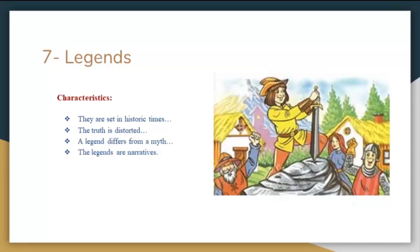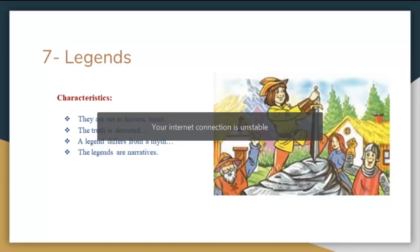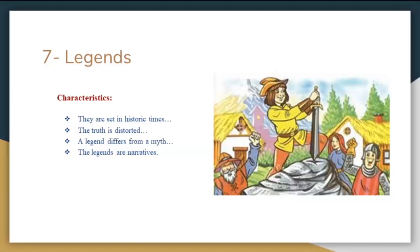The next category is legends. Legends are unverifiable historical or biographical accounts that were told by professional poets whose function was to recite the great deeds of their cultural heroes. One of the most popular legends in the English language is King Arthur. Some characteristics: they are set in historic times and focus on the lives of extraordinary humans and events, often with a kernel of truth, though the truth is distorted. Attributes of courage, goodness, wisdom, or beauty are often highly exaggerated. A legend differs from a myth by portraying a human hero rather than a god or goddess. Legends are narrative.